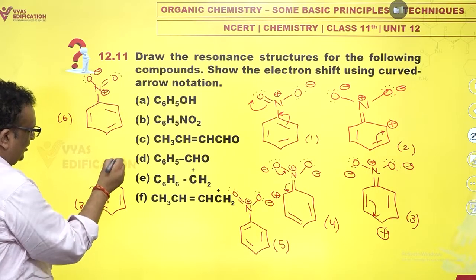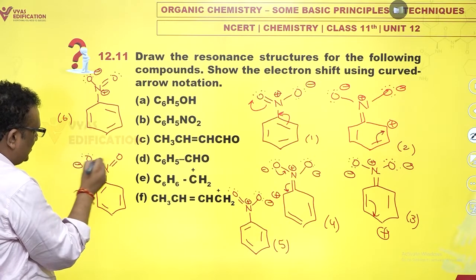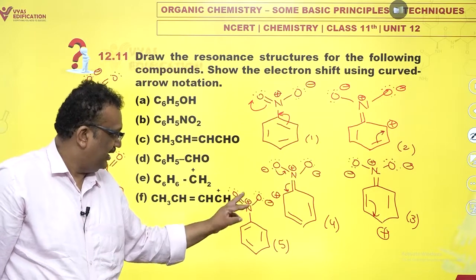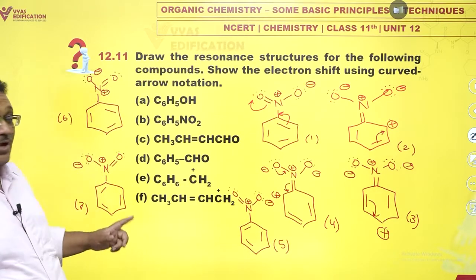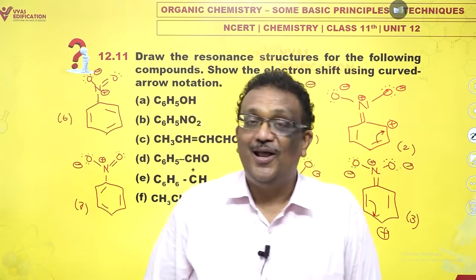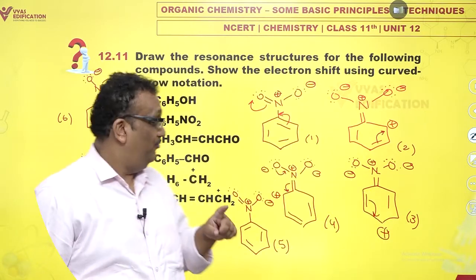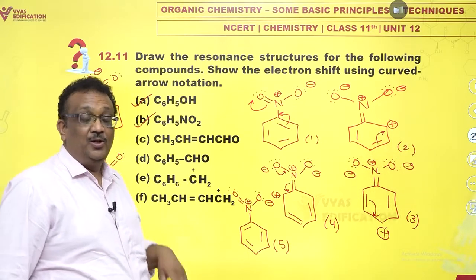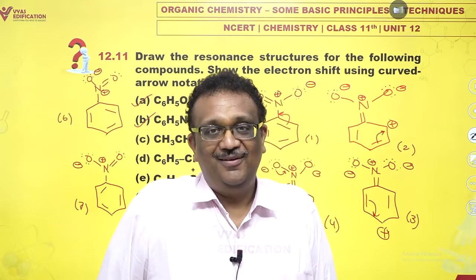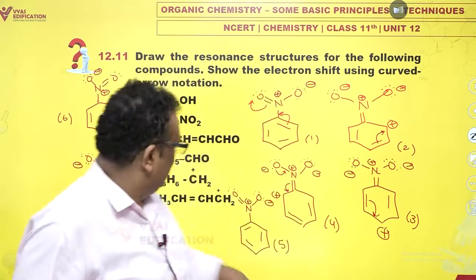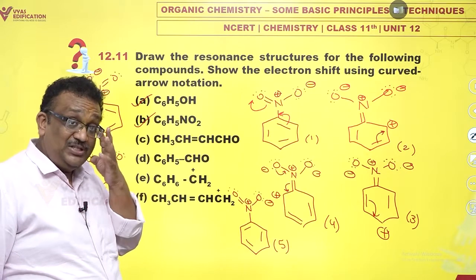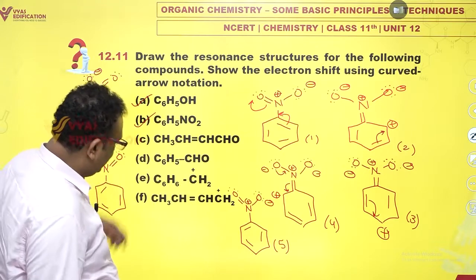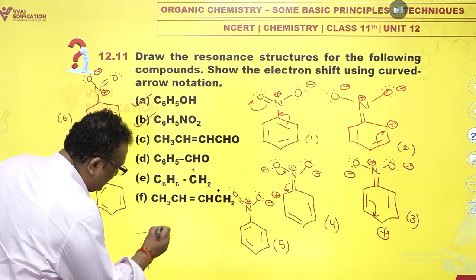Now instead of double single, I could have written double here and single here, right? Like this. So I also have six, and I also have a seventh structure. What does that mean? I'm just changing places here, places of double and single bond in NO2 group, ping tang. So I get seven contributing structures, my dear, for nitrobenzene like this. Now when we see C and D, benzene ring with CHO—CHO group is very similar.